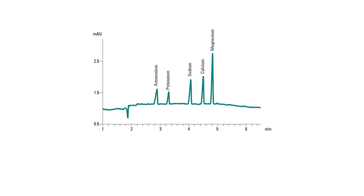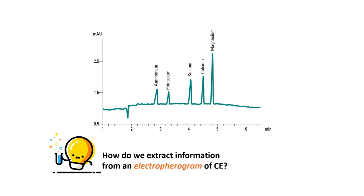Now that we have learned about the underlying principles of how capillary electrophoresis works, in the next video we will be looking at the practical aspect of capillary electrophoresis. This diagram shows an electropherogram of CE, which is pretty similar to the chromatogram obtained from HPLC. The key questions for the next video will be: how do we extract information from an electropherogram of CE? We will be talking about three aspects of an electropherogram.